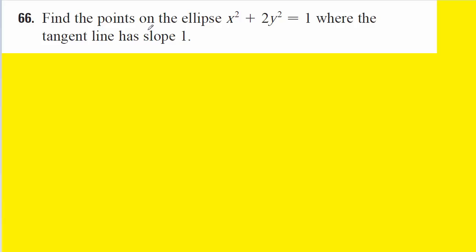One of the key words in this question is slope. And of course, in calculus, in order to find the slope of a given function, we must compute its derivative. So let's go ahead and write the function and then calculate the derivative. Because this equation is not written as y as a function of x, we're going to have to take the derivative implicitly.